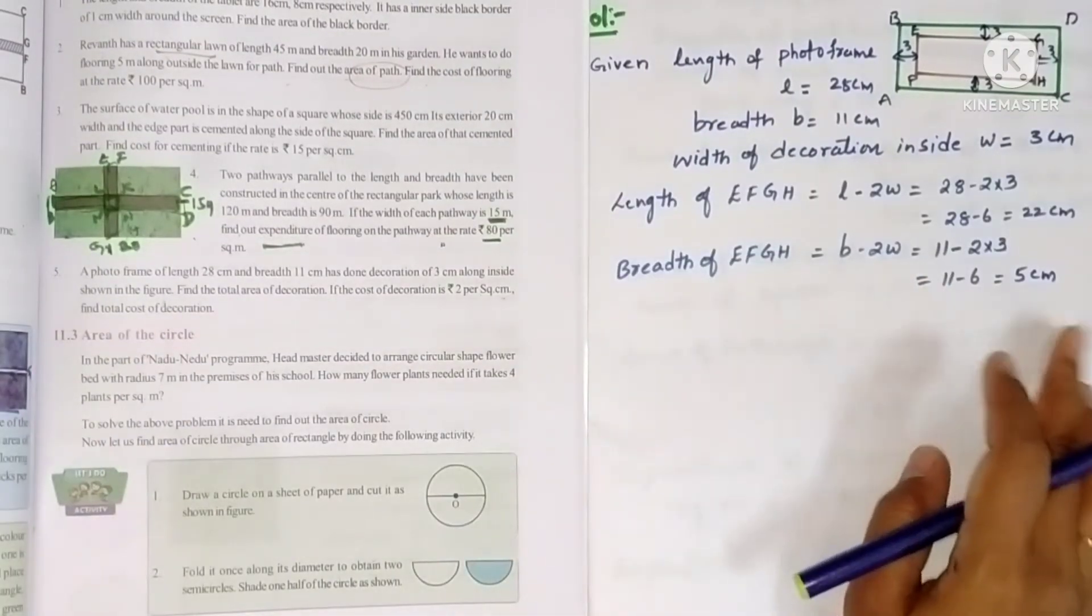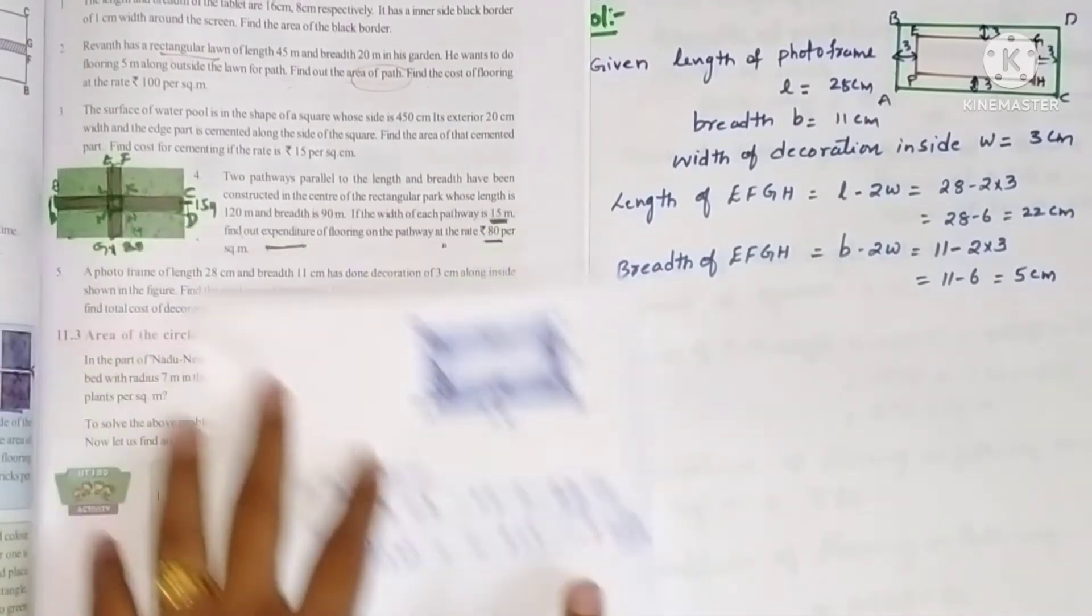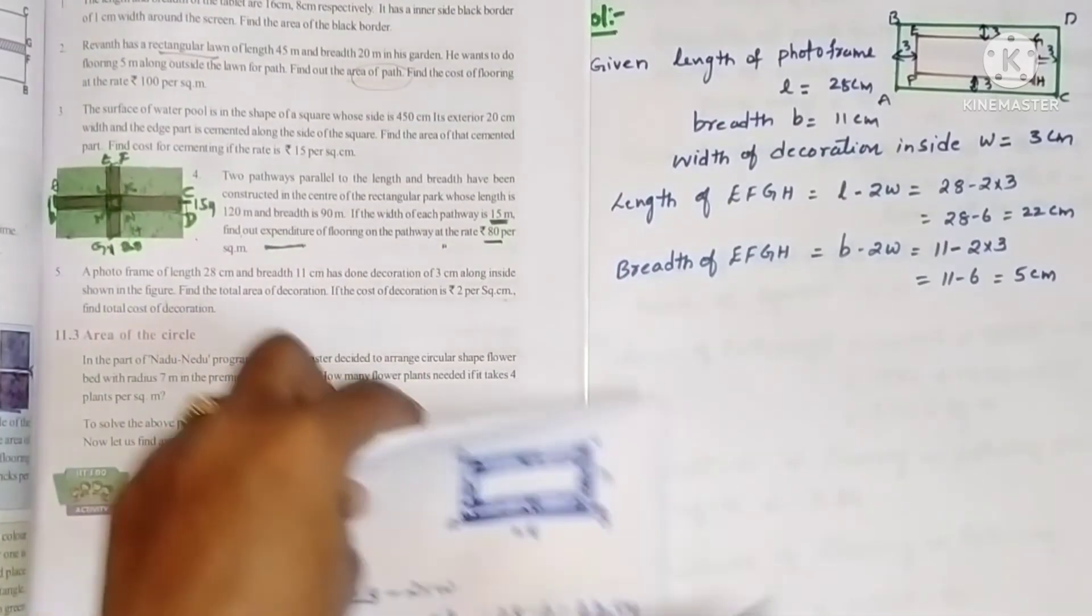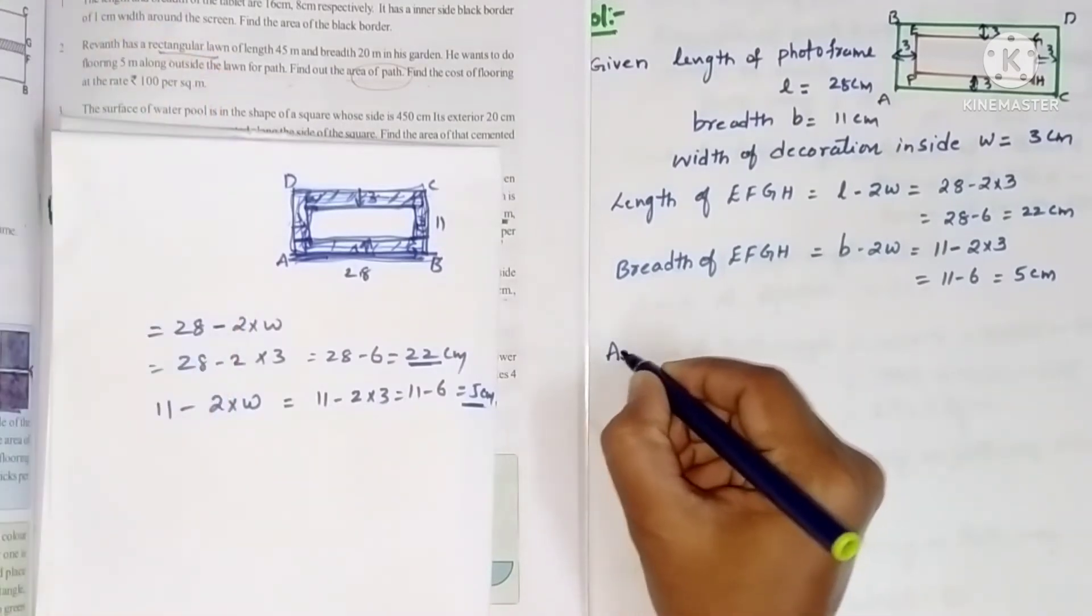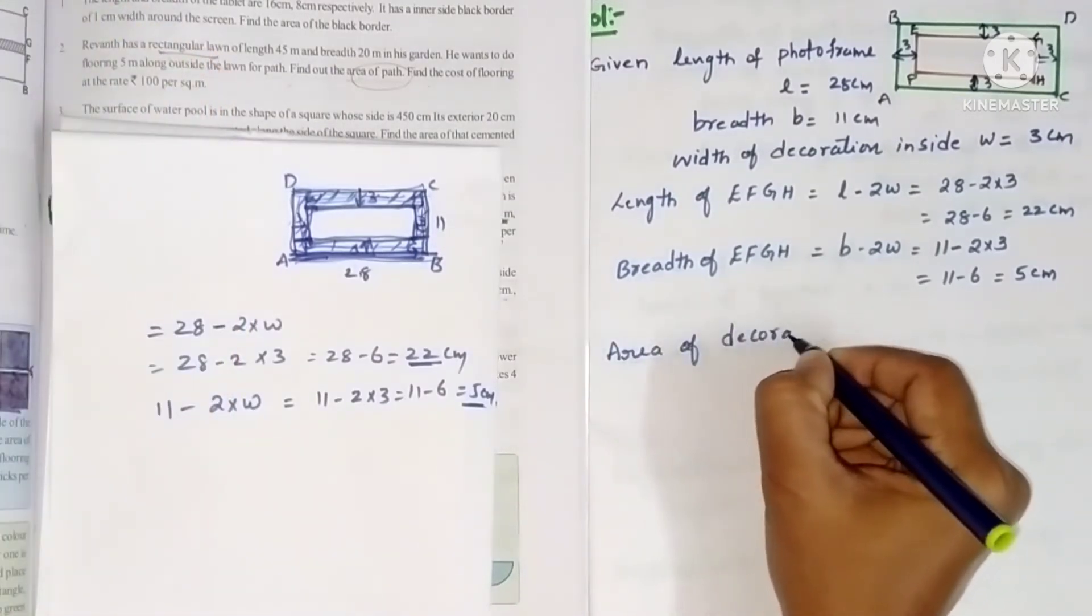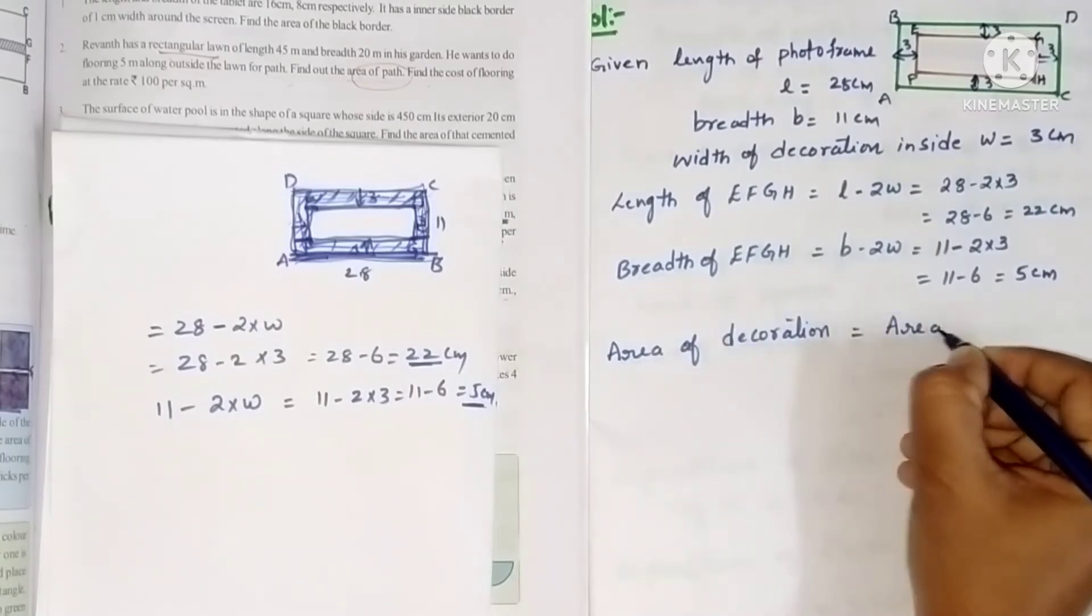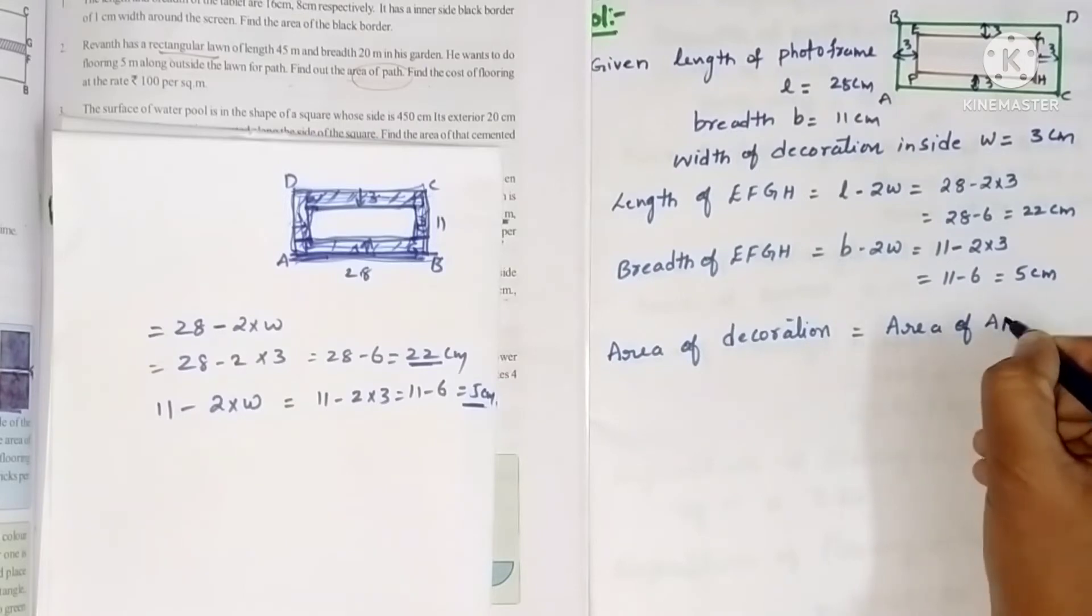So I just wrote the steps. These two steps I already explained here. So now area of decoration. How do you get area of decoration? Area of ABCD rectangle.